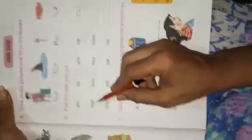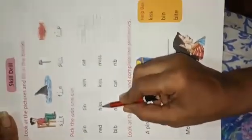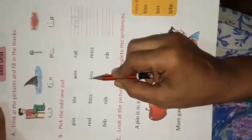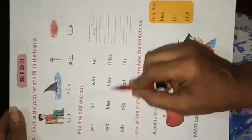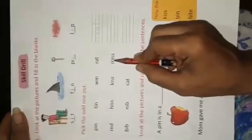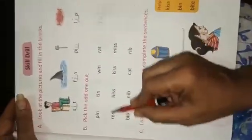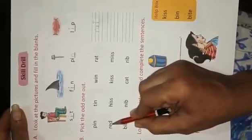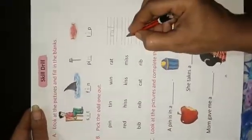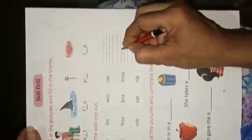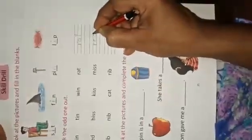Now in second line, R-E-D red, K-I-S-S kiss, M-I-S-S miss. These three words are similar. These have double S in the end. But this word have no double S in the end. So we write here R-E-D red. This is the odd one.